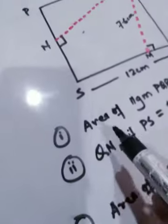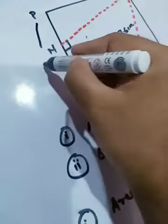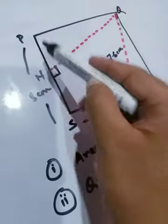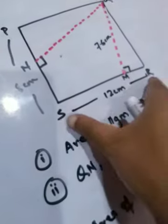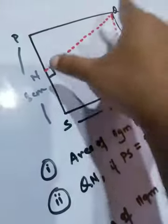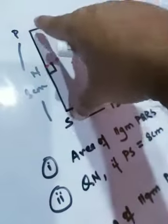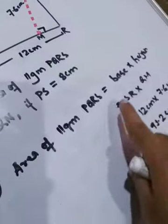The next part requires finding the value of QN, where PS is given as 8 centimeters. Now if you consider QN as the height, then you have to consider PS as the base — because you need to see which side the height is falling on. QM was falling on SR, so we took SR as the base. But now the height has changed to QN, and QN is falling on PS. So we consider PS as the base and QN as the height.